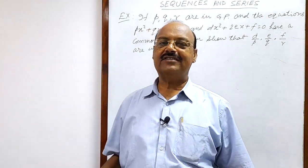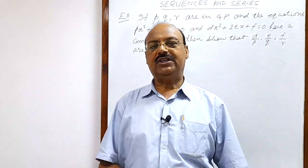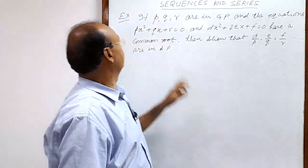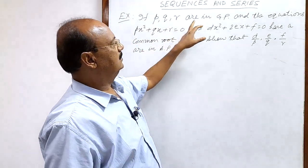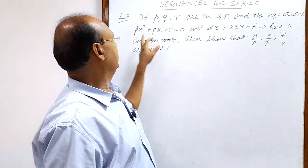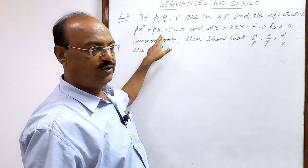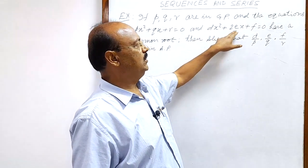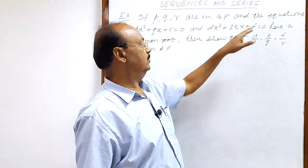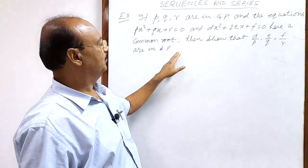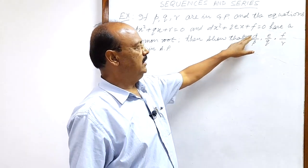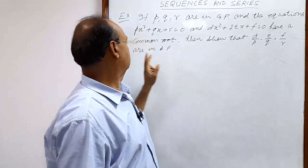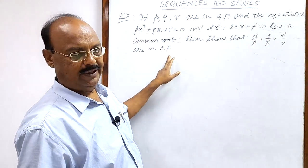Welcome students. Let us see a very interesting and important question from the chapter Sequences and Series. The question is: if p, q, r are in GP and the equations px² + qx + r = 0 and dx² + 2ex + f = 0 have a common root, then show that d/p, e/q, and f/r are in AP.